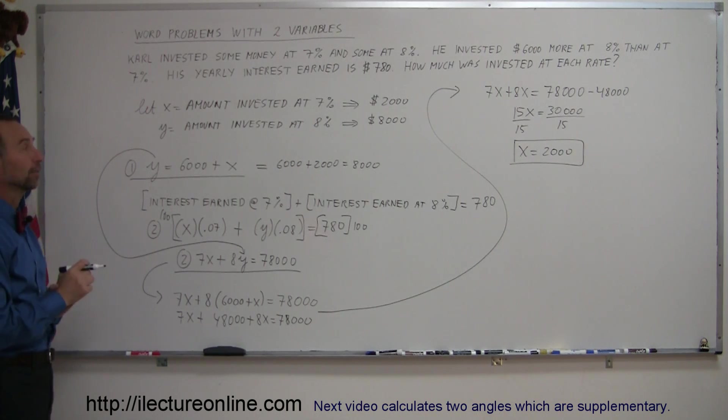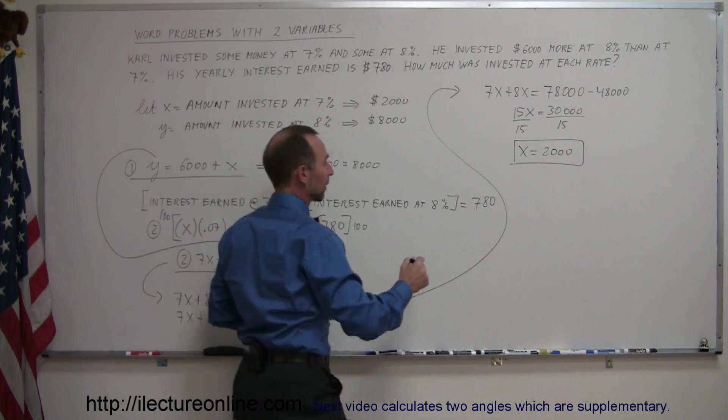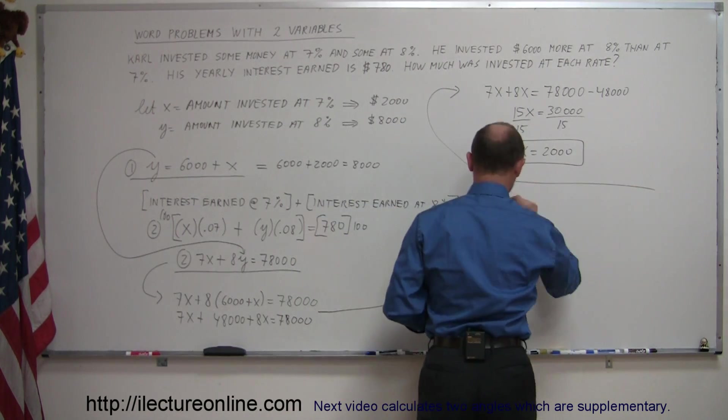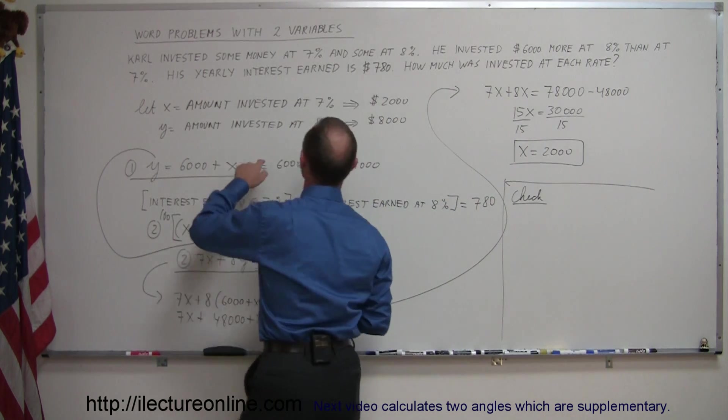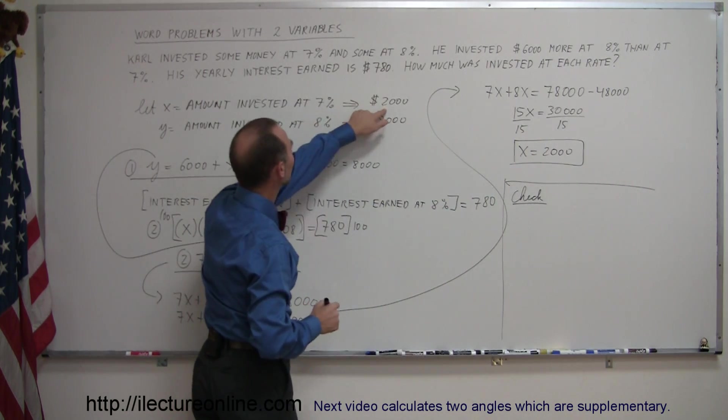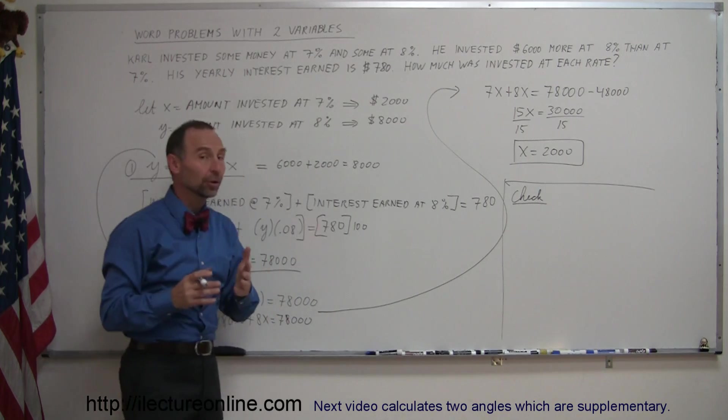Now, how do I know I got this right? This is a way that I can check. I can say, okay, I'm going to check here, draw a little box, let's check our answer. If I invested $2,000 at 7%, how much did I earn?